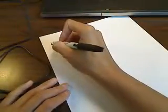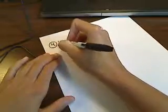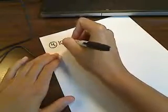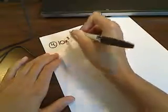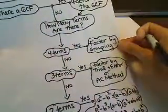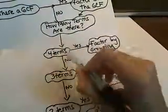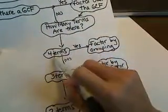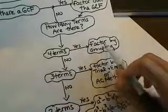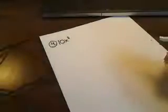The whole application of that last problem is to be able to factor by grouping. When you have four terms, go back to the factoring flow diagram — if there are four terms, you use the process of grouping.